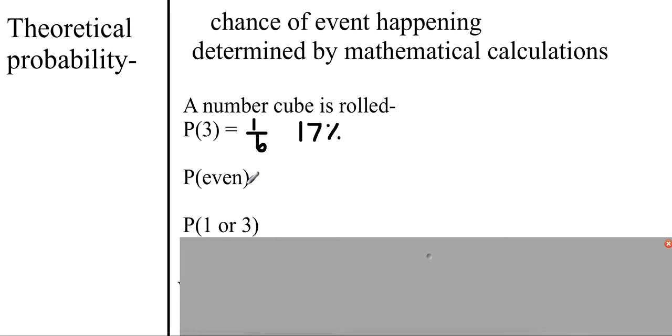The probability of getting an even number: Well, 2, 4, and 6 are even, so there's 3 out of 6 possible outcomes, which simplifies to 1 half or 50%. The probability of rolling 1 or 3: that would be 2 possible outcomes out of 6, which is 1 third or 33%.